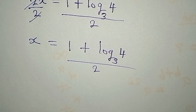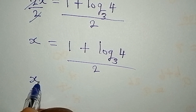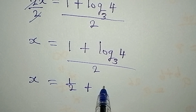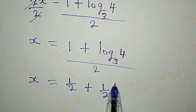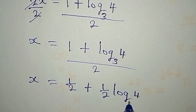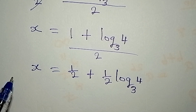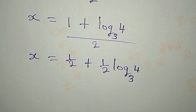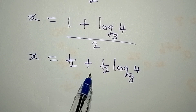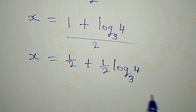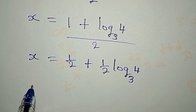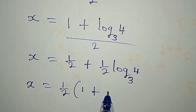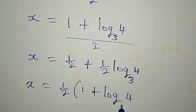We can equally rearrange so we get x to be equal to one half plus one half log 4 to base 3. This becomes the value of x that should satisfy the equation. We can also factorize so that one half comes out as the common factor, giving x equals one half times the quantity 1 plus log 4 to base 3.